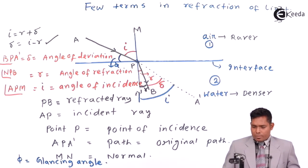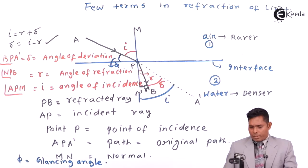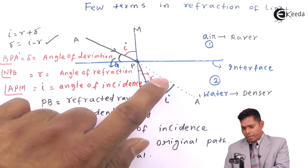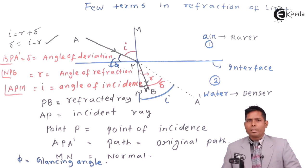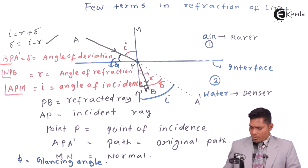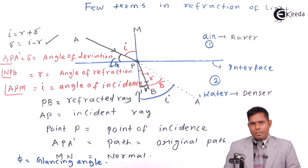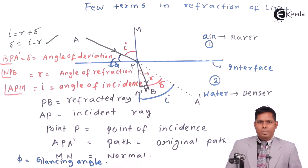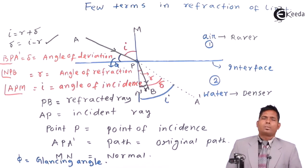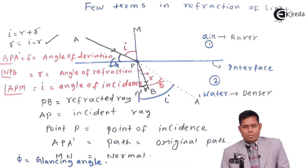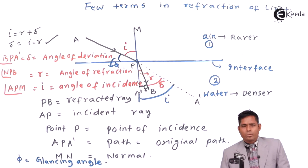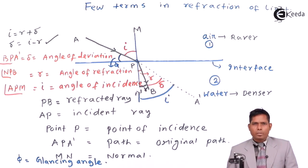You can also see that when a ray of light moves from a rarer medium to a denser medium, it bends towards the normal, which means I is greater than R. And when it moves from a denser medium to a rarer medium, I will be less than R. So that's all for the definition of terms — thank you, and we'll move on to the next video.